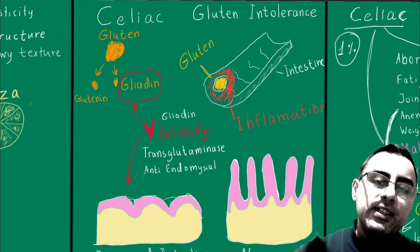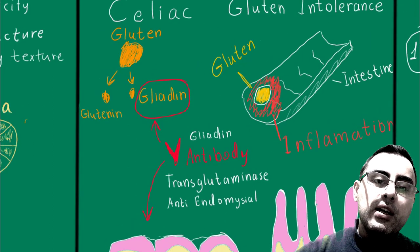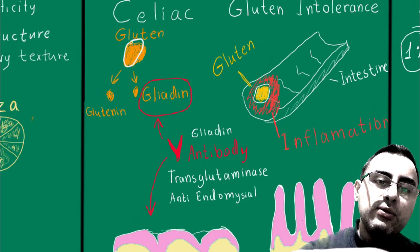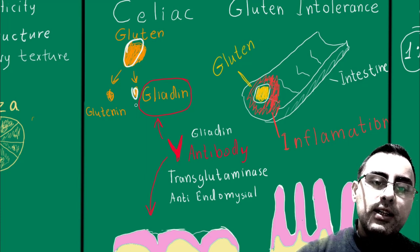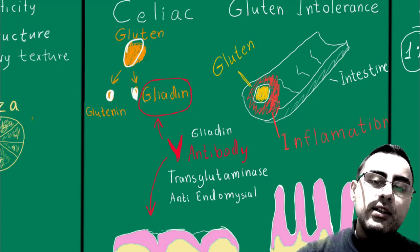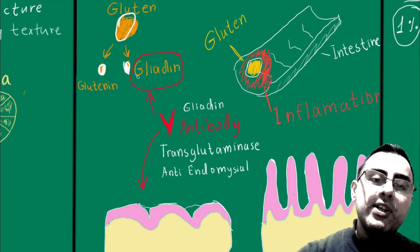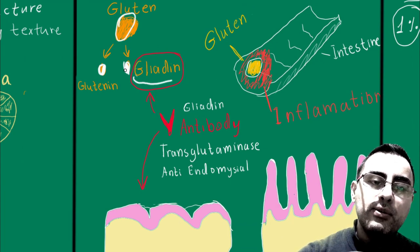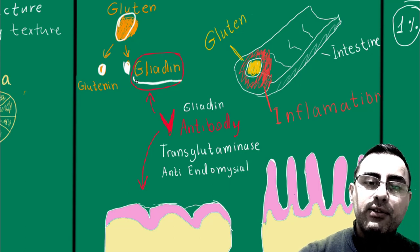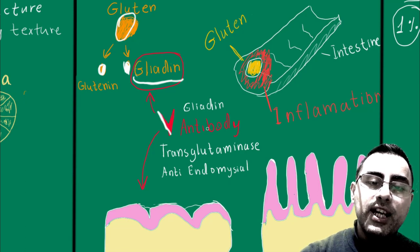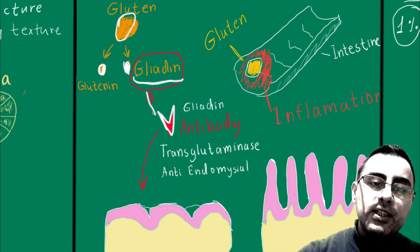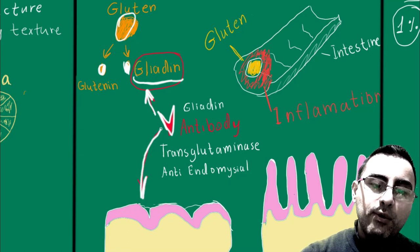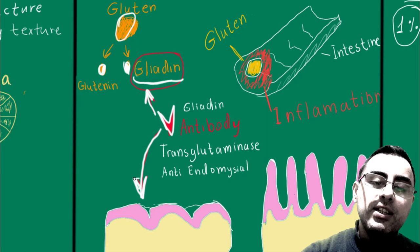When we eat bread, for example, gluten is broken down into two small parts: gliadin and glutenin. Sometimes our body recognizes this gliadin — this small protein — as an enemy of the body, and it starts the production of antibodies against it. These antibodies fight not only gliadin but also damage the intestinal wall.